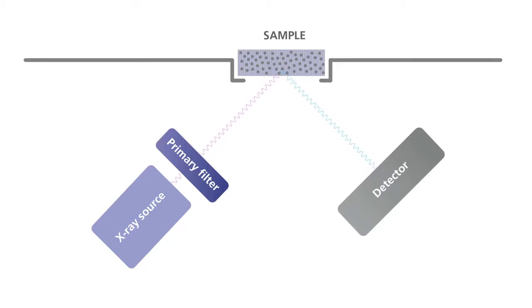When the beam hits the atoms in the sample, they react by generating secondary X-rays that are collected and processed by a detector.